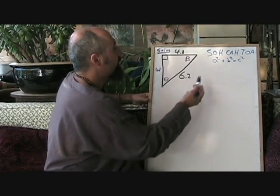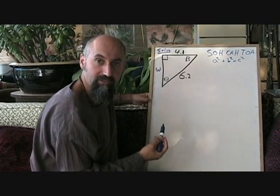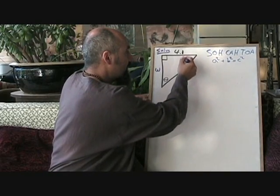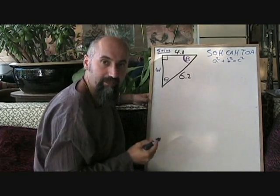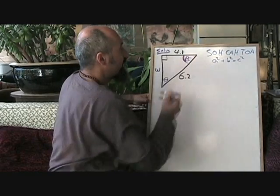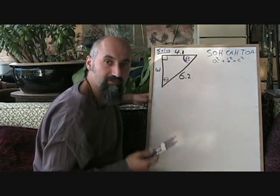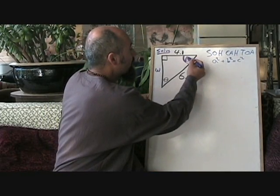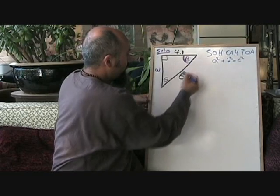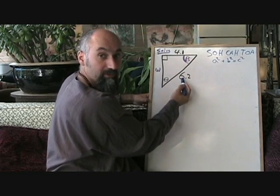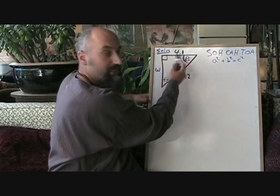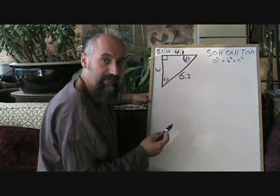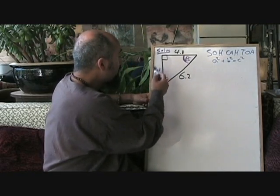Let's say we want to solve for beta this time first. First thing you're going to do is think about SOH CAH TOA and put yourself on this angle. So if you're sitting here, which pieces of information do you have from a triangle? If you're sitting at beta, you have the hypotenuse, which is across from 90 degrees, and you have the adjacent, which is 4.1. Those are the only two sides you have, and you're missing the opposite.